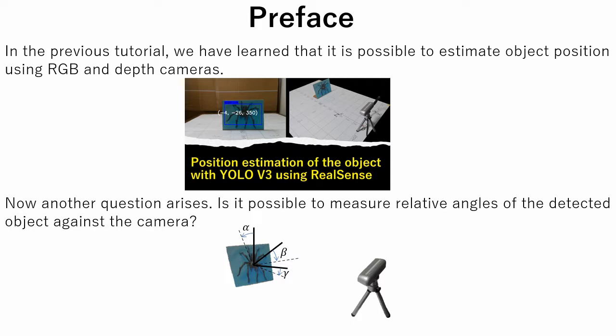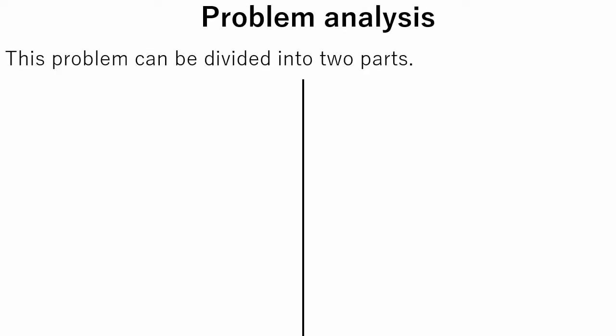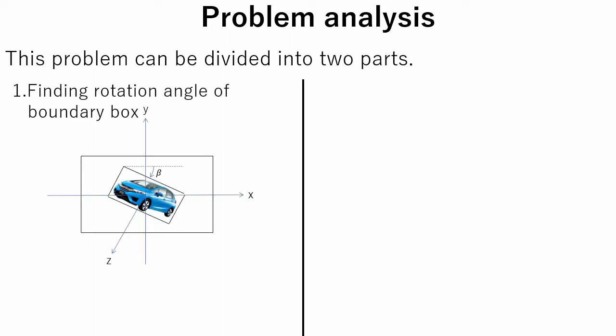This feature would be useful in various applications. This problem can be divided into two parts. The first part is finding the rotation angle of the bounding box. To do this with YOLO, the algorithm itself should be modified. Since modifying YOLO to train with rotated bounding boxes is quite challenging, we will do this on another occasion.